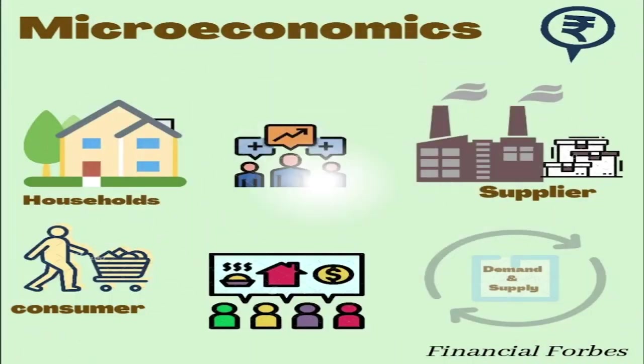Here is our presentation of what microeconomics is — how goods are sold from the supplier, then we consume, and then demand and supply only. It goes round robin, or vice versa.